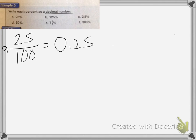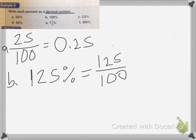For B, we'll have 125%, which is equal to 125 over 100, which is equal to 1.25 if you divided it.